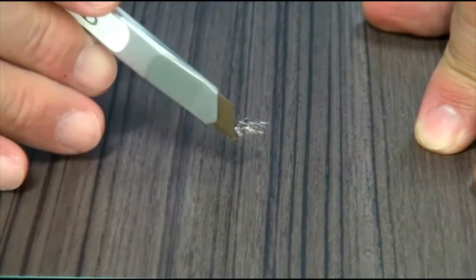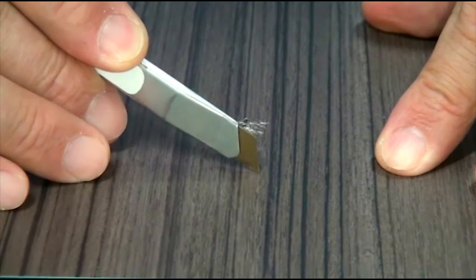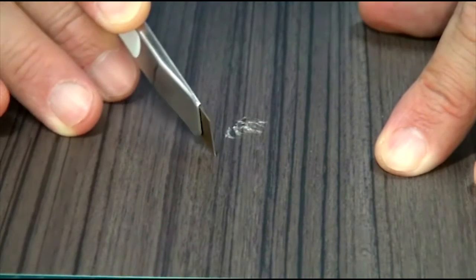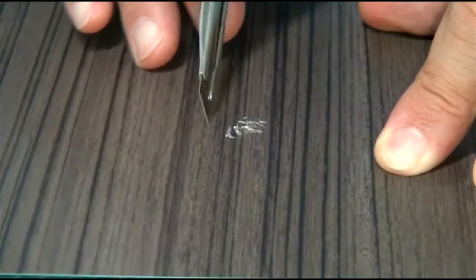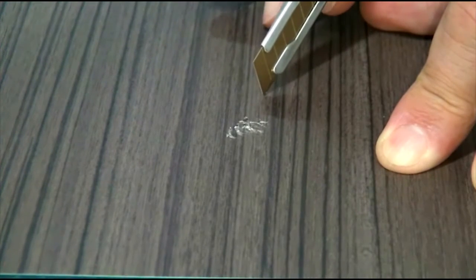Using a clean sharp blade, cut around the damaged film so there is at least one quarter inch margin of undamaged film around it. Cut a simple shape that will be easy to duplicate later in this procedure.